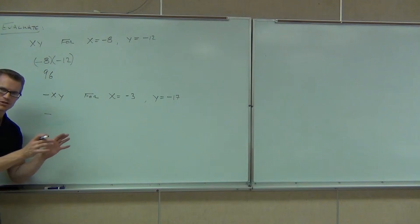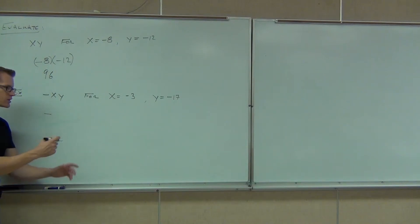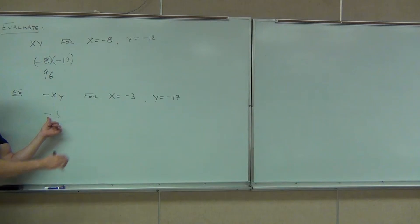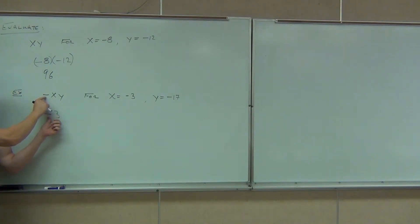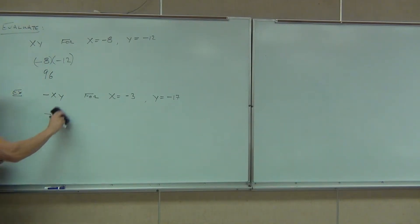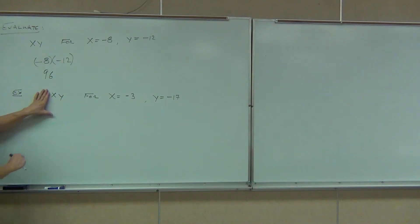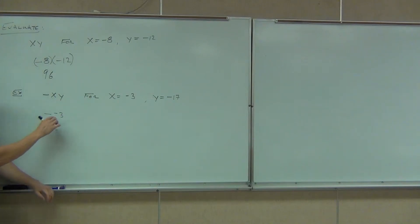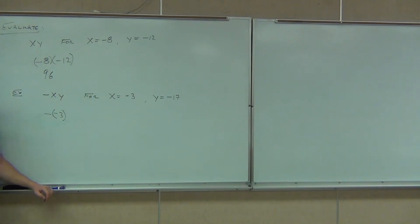So I can't just substitute directly without being careful — please watch on the board for a second. If I do just that, I've lost that negative. Does that make sense? So how do you accomplish this problem? You go: okay, I've got the negative. Now I look for the x. The x is negative 3. And to show that that's negative 3, I'm going to use parentheses, just like we did in the previous example.